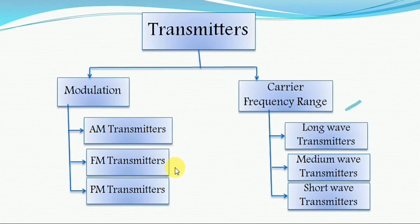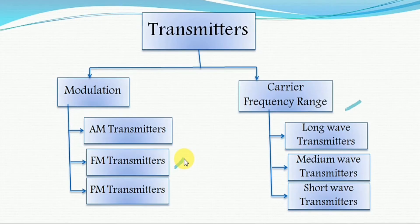The second type of transmitter based on the type of modulation is the FM transmitter. In FM transmitters, the signal voltage of the modulating signal modulates the frequency of a carrier signal. FM transmitters are used in the very high frequency range and ultra high frequency range for FM broadcast, television sound broadcasting, and radio telephone communication over short distances.